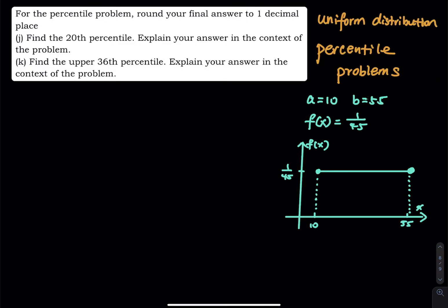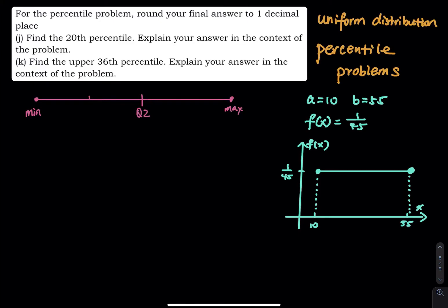The first problem is the 20th percentile. For percentile, recall when we talked about percentile and quartile in the context of a box plot and the five-number summary. We have a minimum and a maximum. The median Q2 divides the data into two 50% pieces. Q1 is the median of the first half — the first 25%. Q3 is the median of the second half. So the 25th percentile represents the first 25% of the probability.